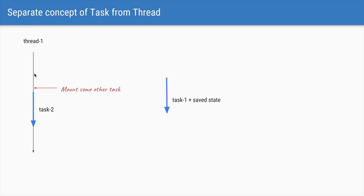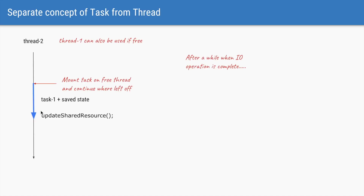When the task is unmounted, the current state of that task is saved — all local variables and the stack of that task are saved separately. Thread one, having saved task one and its state in memory, is now free to run other tasks. So if another task comes in, thread one will mount task two and start running it. Once the I/O operation that task one was waiting for completes, the scheduler finds a free thread — say thread two — and mounts task one on that thread.